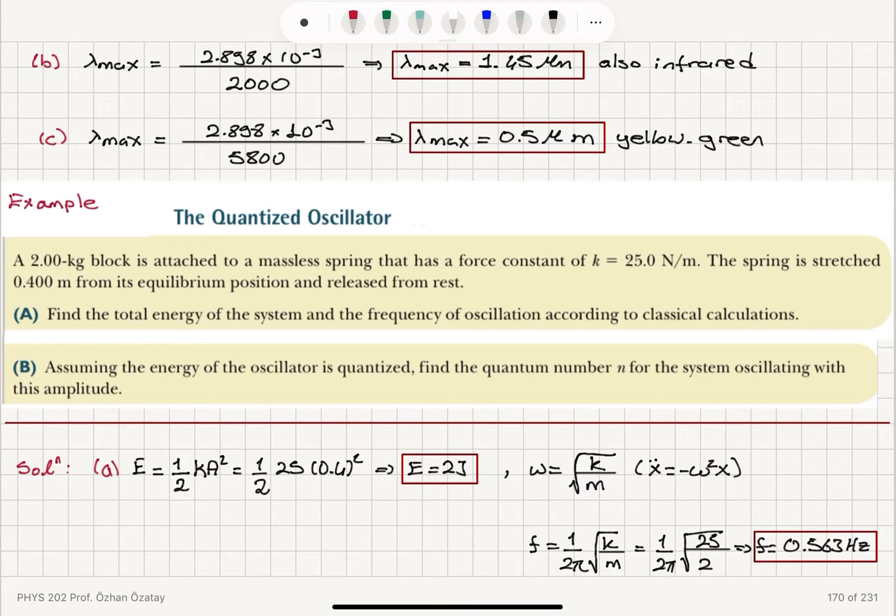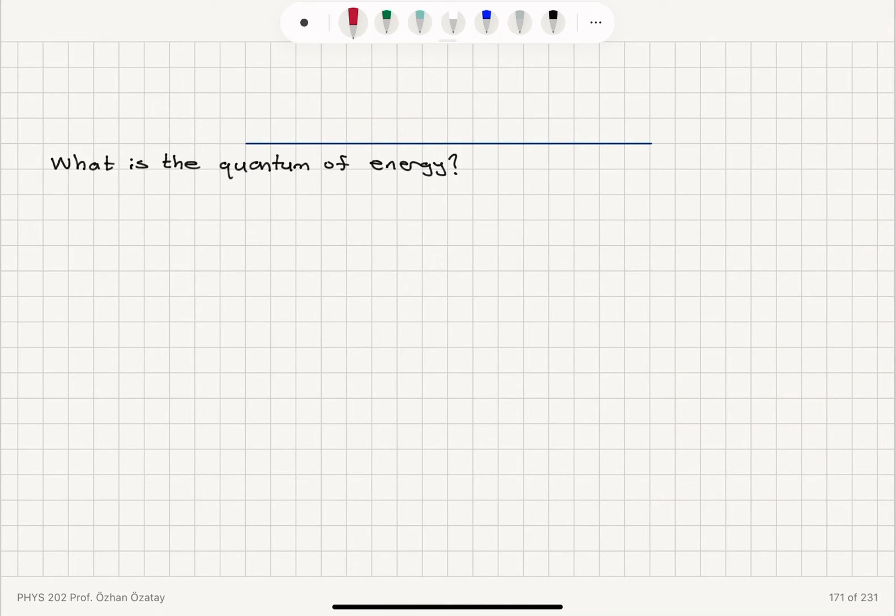Assuming the energy of the oscillator is quantized, find the quantum number n for the system oscillating with this amplitude. Now the total energy is quantized in units of hf, n times hf, this must be equal to 2 joules.